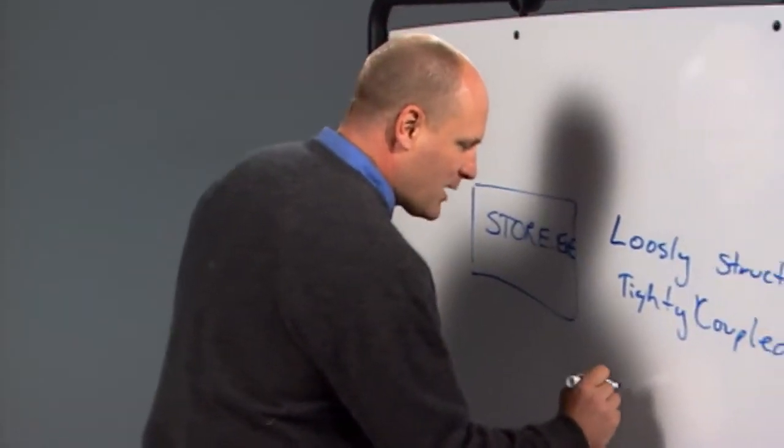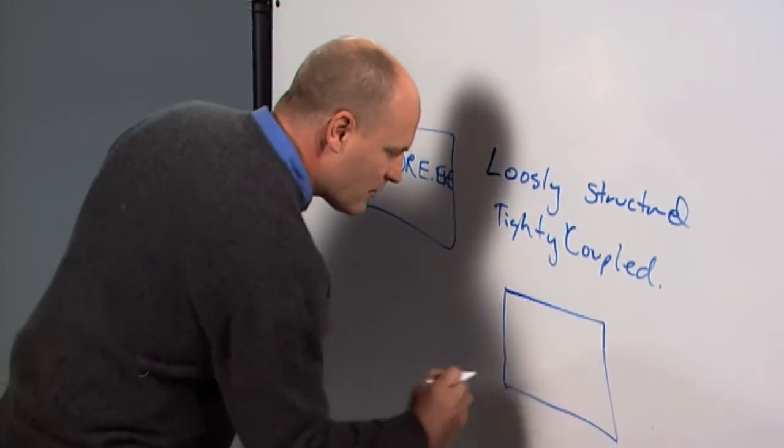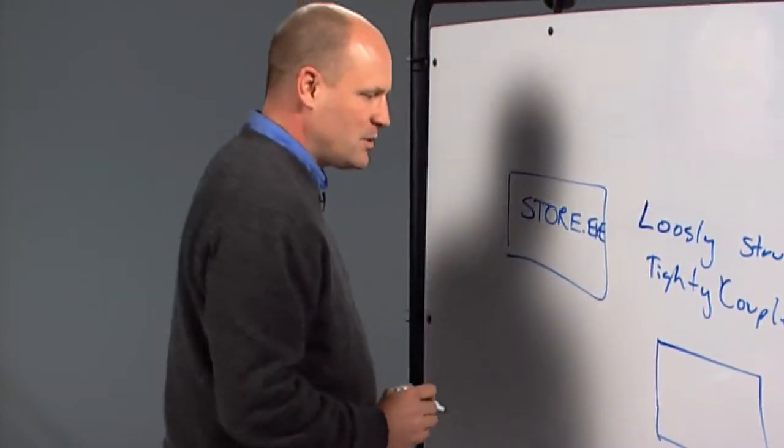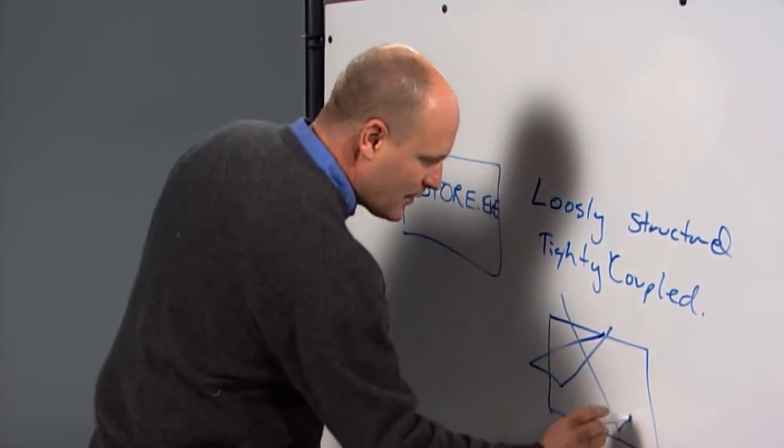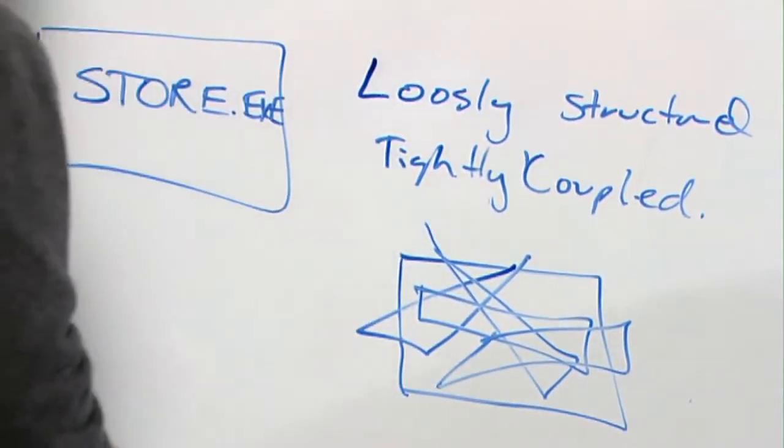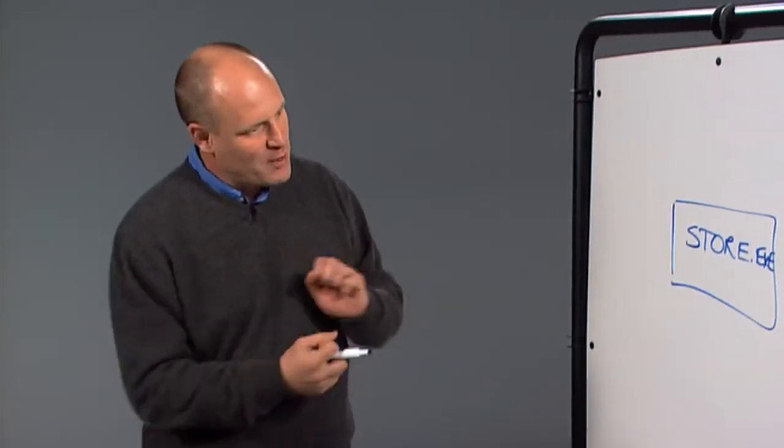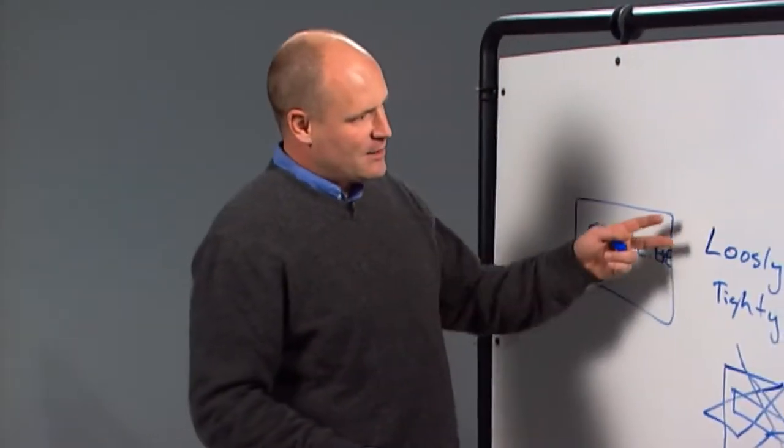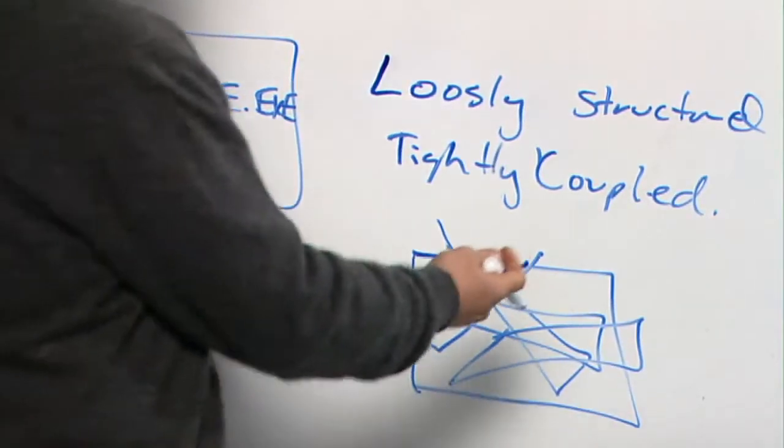When we were doing a review back at the beginning of planning for Exchange 2007 with Bill Gates, we had a little diagram that looked a little bit like this. Each one of these layers was labeled and was a different protocol or piece of business logic that was entwined throughout the process. Loosely structured means there weren't clean layers with good interfaces between them.